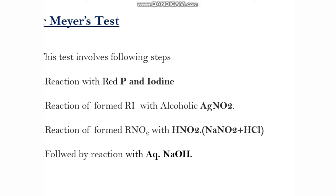In the first step, the alcohol is treated with red phosphorus and iodine. That reaction results in an alkyl iodide. So in the first step, the alcohol reacts with red phosphorus and iodine to form alkyl iodide.